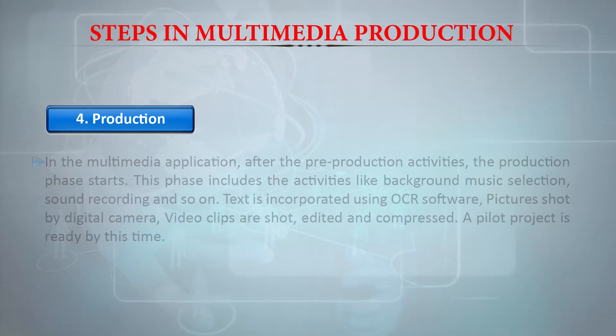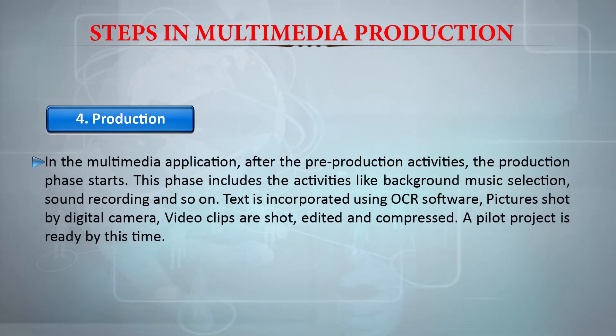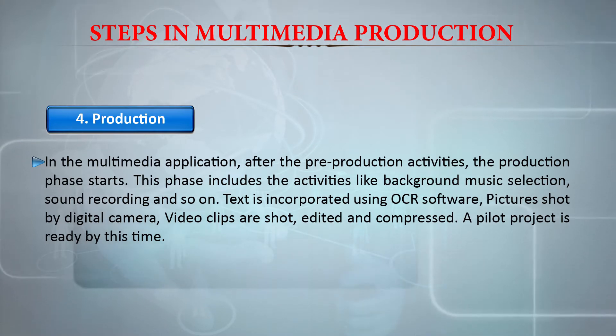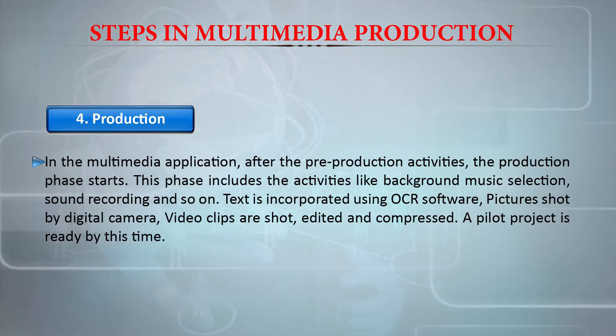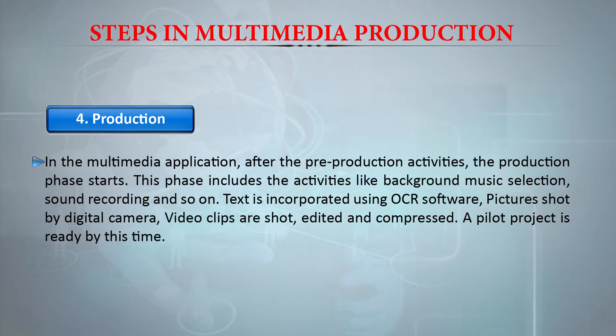The next phase is production. After the pre-production activity, the production phase starts. This phase includes activities like background music selection, sound recording, and so on. Text is incorporated using OCR software, pictures can be shot by digital camera, and actual production begins during this phase. Testing is also very important — you can test at each and every step. For example, when planning the budget you test whether it will be released on schedule, and when designing the structure you evaluate whether it is planned correctly or needs inclusion or exclusion of elements.